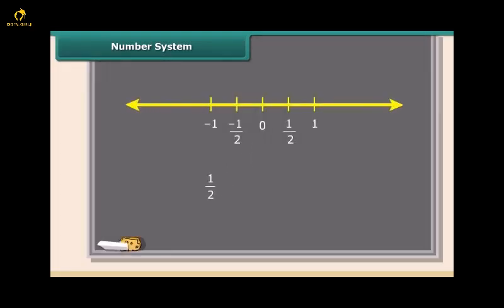Students, what about 1 by 2? Is it a whole number, natural number or an integer? You can see 1 by 2 lies between 0 and 1. We call it a rational number.